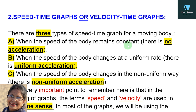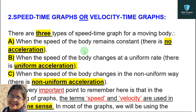Students, hope you are doing well. In the previous video we learned about distance-time graphs, and in this class we will discuss speed-time graphs or velocity-time graphs. There are three types of speed-time graphs for a moving body: A) when the speed of the body remains constant, there is no acceleration; B) when the speed of the body changes at a uniform rate, there is uniform acceleration.